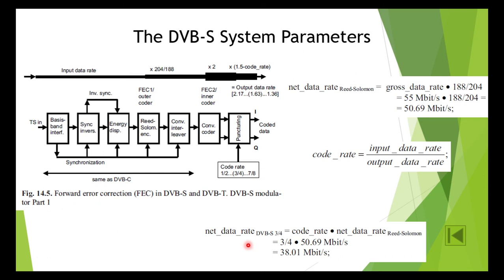A good compromise is usually a code rate of 3/4. If you go to any DD Doordarshan, you can see that the code rate is 3/4 actually. The code rate can then be used to control the error protection and thus as a reciprocal of this, also the net data rate. So net data rate in DVB-S with the code rate of 3/4 after convolutional coding is then net data rate equals code rate into net data rate after Reed Solomon. The code rate is 3/4 into 50.69 megabits per second, which will give you 38.01 megabits per second. This is about the system parameters.